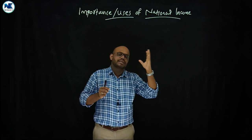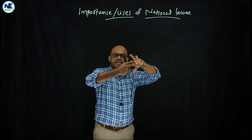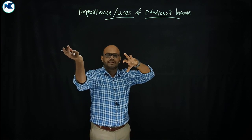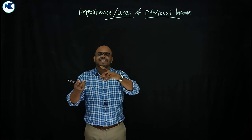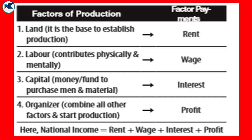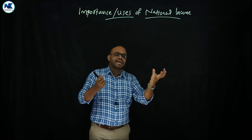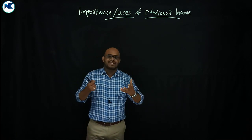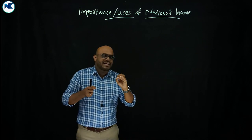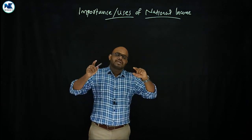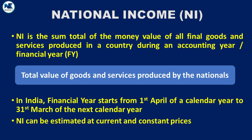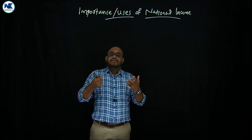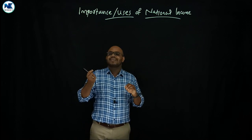In the circular flow of income, there is production. Using the output method, we get income — wages, interest, and profit. The Central Statistical Organization (CSO) is responsible for compiling national income data.